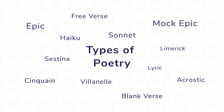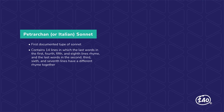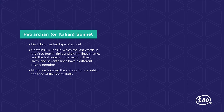Let's take a look at sonnets. A sonnet is known as a love poem with a strict rhyme scheme. There are actually two forms of sonnets. Petrarchan sonnets, also known as Italian sonnets, are the first documented type of sonnet, first appearing in the year 1613. This type of sonnet contains 14 lines in which the last words in the first, fourth, fifth, and eighth lines rhyme, and the last words in the second, third, sixth, and seventh lines have a different rhyme together. The ninth line is called the volta, or turn, in which the tone of the poem shifts.